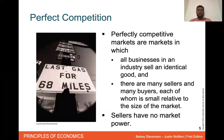Perfect competition. Competitive markets are markets in which all businesses in an industry sell an identical good, and there are many sellers and many buyers, each of whom is small relative to the size of the market. So it just means there are many firms selling identical products with many buyers. Sellers in this case have no market power because it's perfectly competitive — anytime a business does something consumers don't like, they'll just go to the next business that sells the exact same thing. Not one seller has any market power.